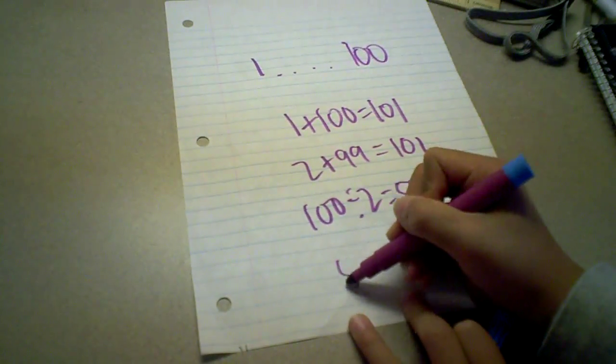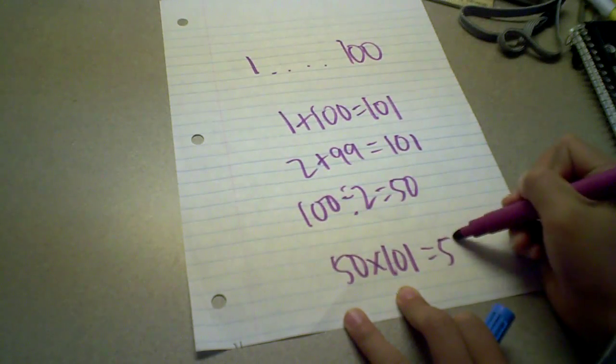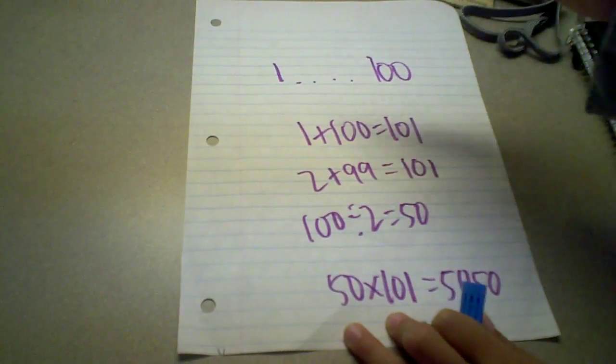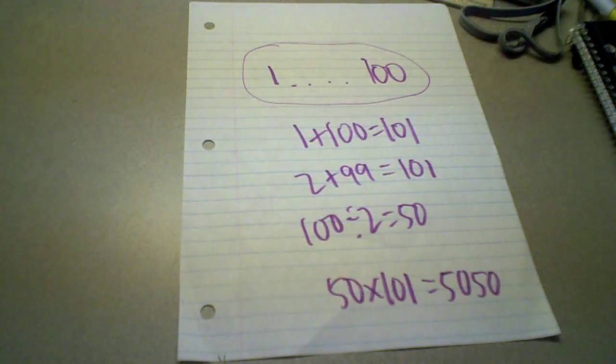So, to figure this out: 50 times 101 equals 5,050. That's the answer to all the numbers between 1 and 100, and it works for every other number.